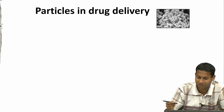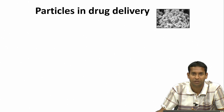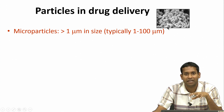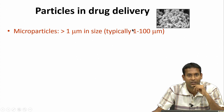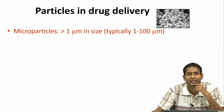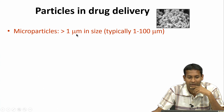Let us talk further about particles in drug delivery. Particles are fairly standard — these are some SEM (scanning electron microscope) images of polymeric particles showing various sizes in this mixture. We can define a few things: microparticles are typically defined in the literature as having a size greater than 1 micron in any dimension — they can be spherical or some other shape. The particle size range of 1 to 100 microns is typically defined as a microparticle.